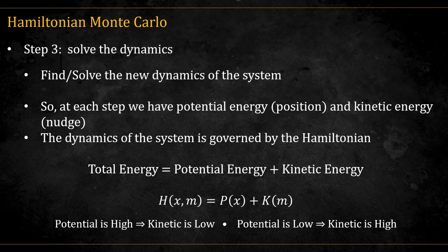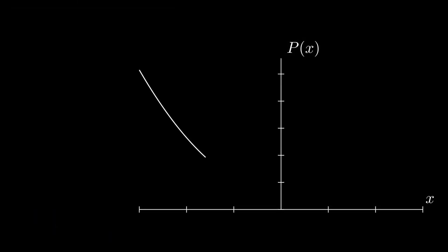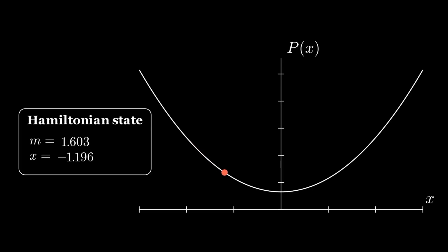So when potential energy is high, kinetic energy must be low. And when potential is low, kinetic rises to compensate. In this animation, you can see how both the state x and the momentum m change as the ball is moving through the negative log f of x, which is denoted here as capital P of x. P stands for potential. You can see the momentum is highest when P of x is lowest, and vice versa.